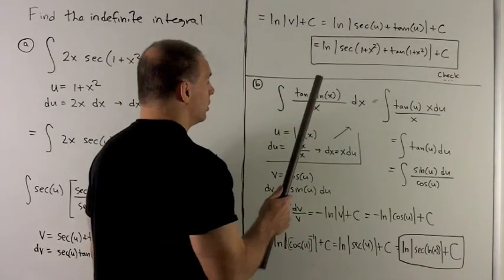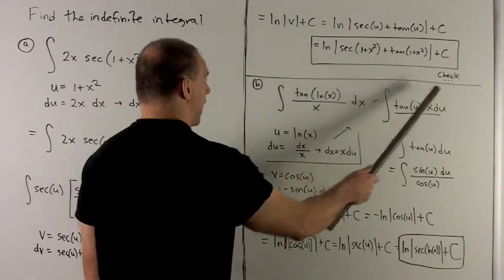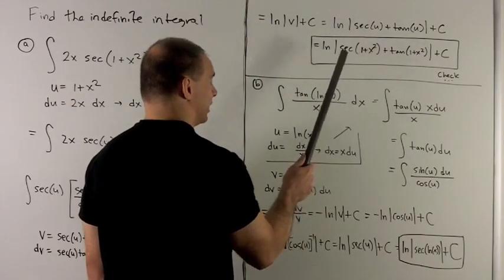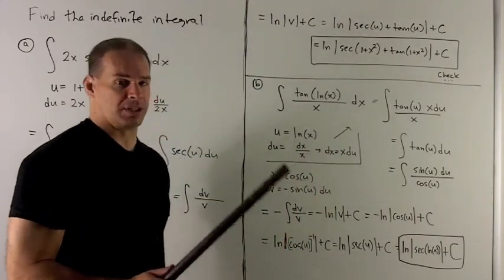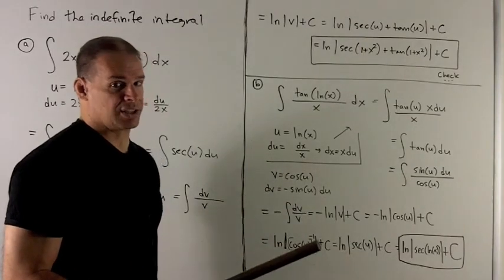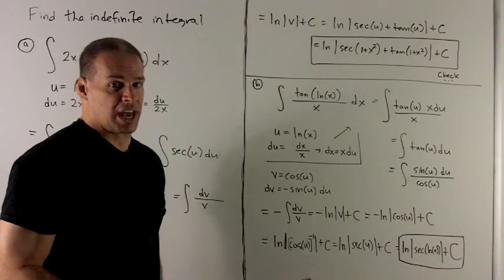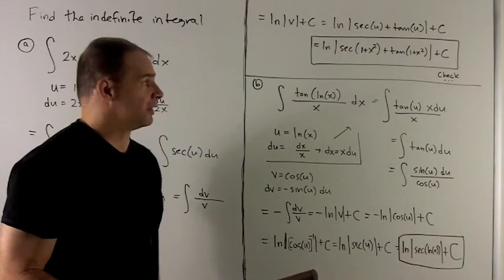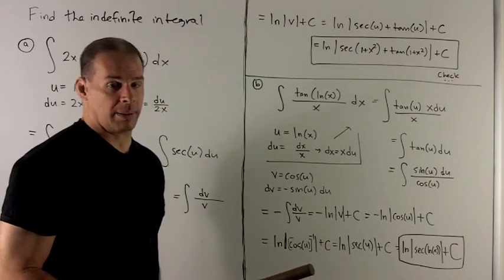And then we put back in for u. So that's going to give me natural log of absolute value, sec(1+x²) + tan(1+x²) plus a constant. I'll leave the check to you. That's just taking the derivative to make sure we get our integrand back.